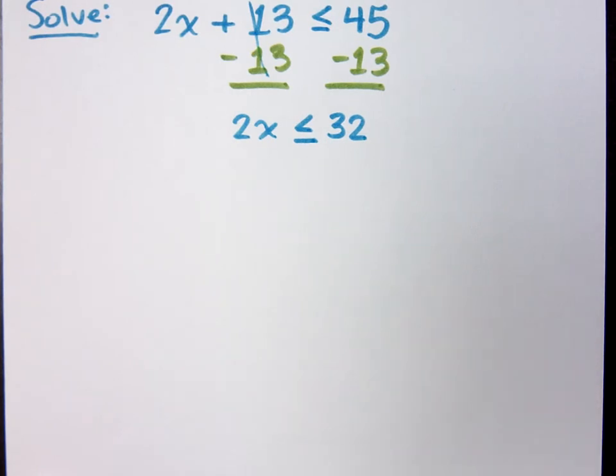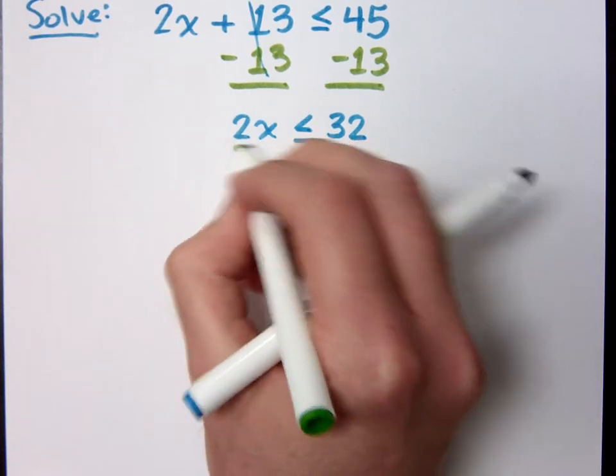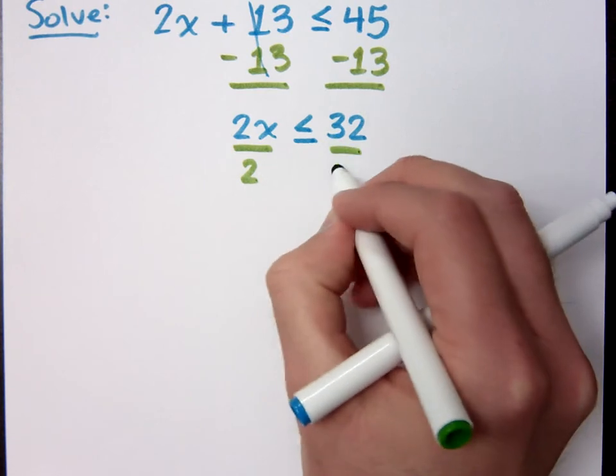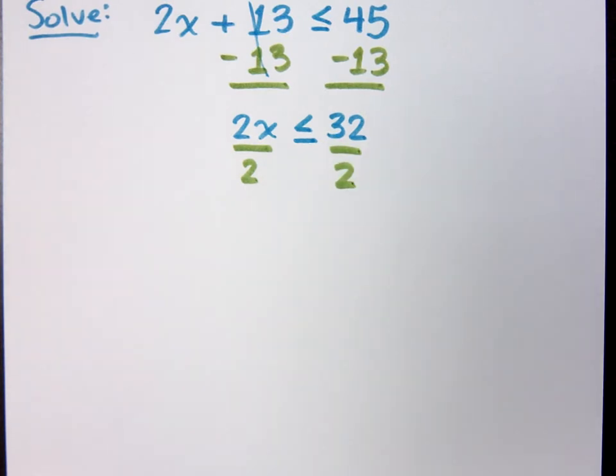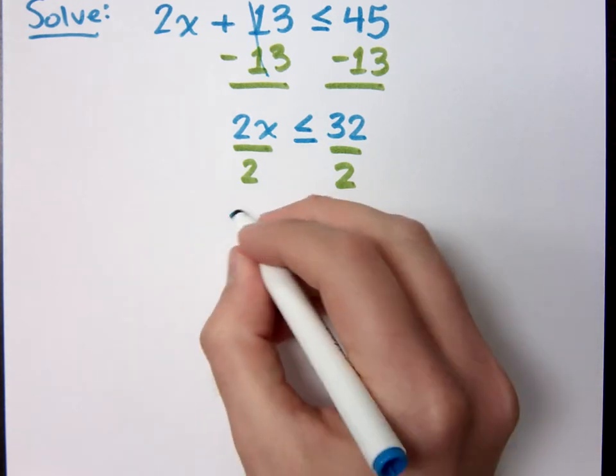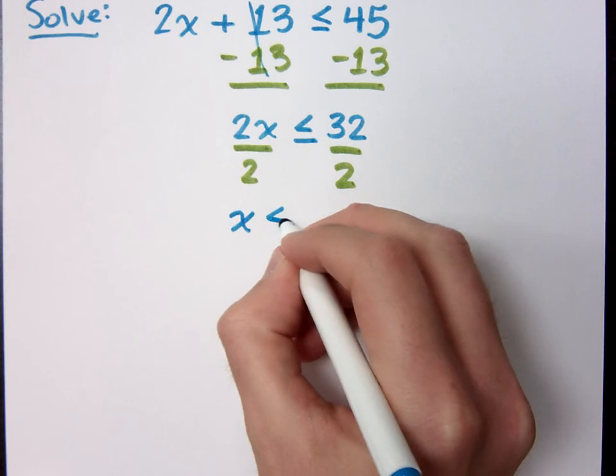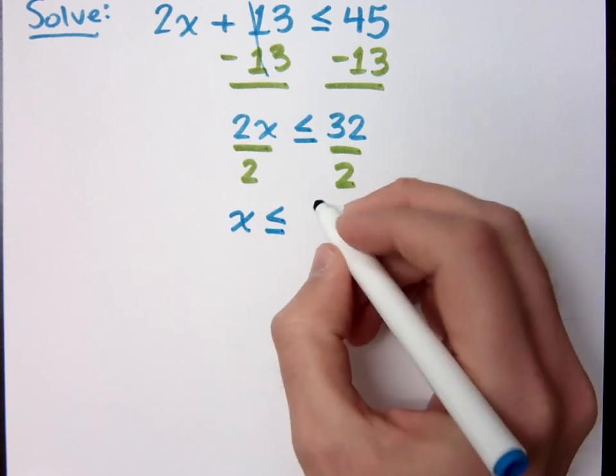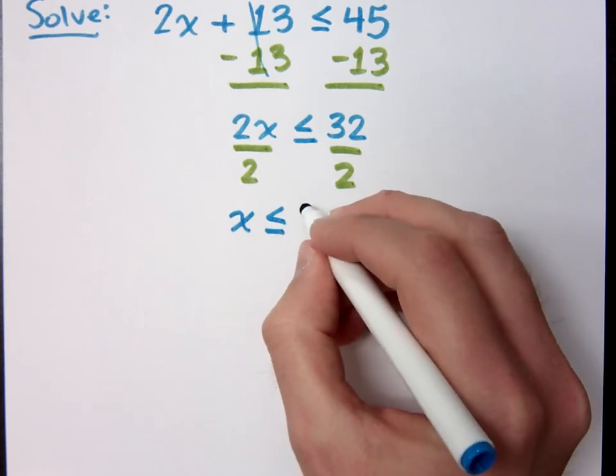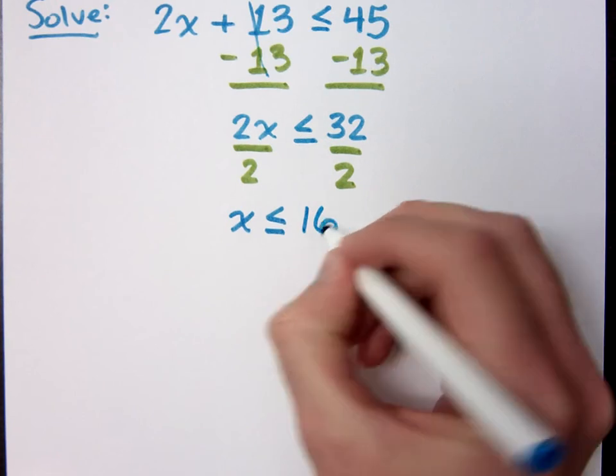How do you finish getting the x by itself? Divide. Divide by the coefficient of 2. And it wouldn't change because it's not negative. Am I dividing by a negative? No. I'm dividing by a positive 2, so everything is cool. So it's still going to be pointing in this direction. x is less than or equal to what? 16. Okay.